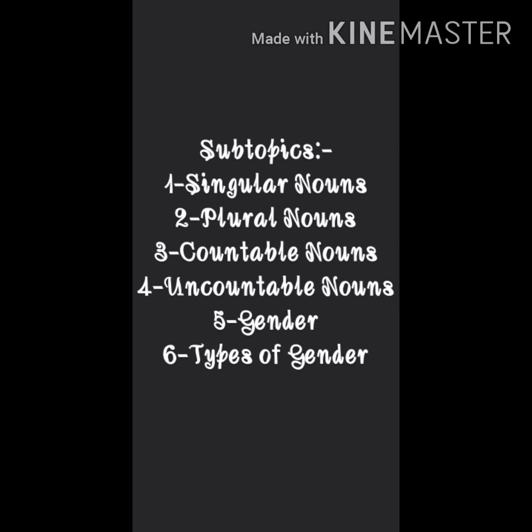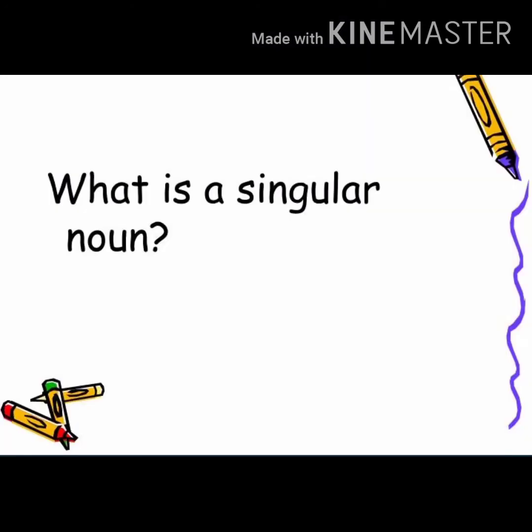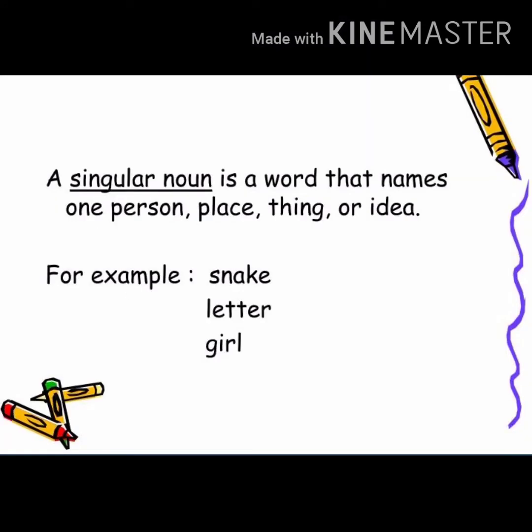First, we are going to read about singular, then plural, then uncountable noun and countable noun — this is all about numbers. Then in gender, we are going to read about gender and its four types. So first of all, we are going to start with singular. What is a singular noun? A singular noun is a word that names one person, place, thing or idea.